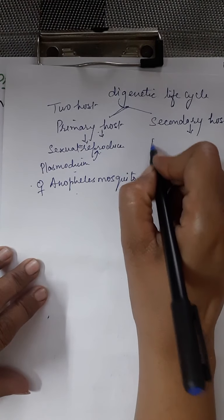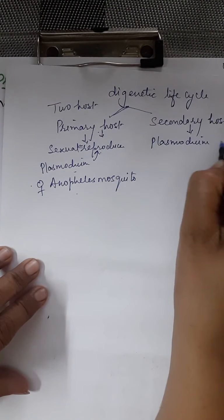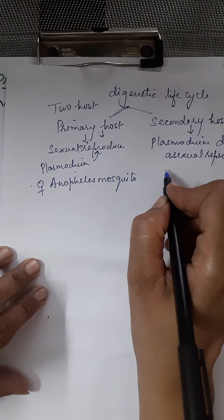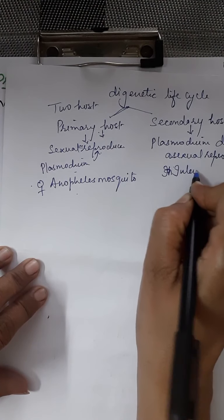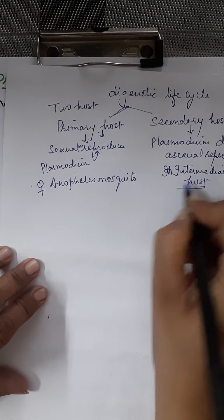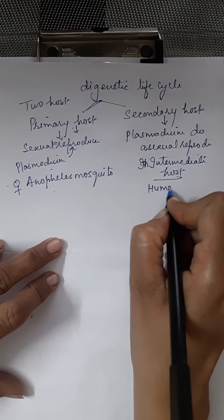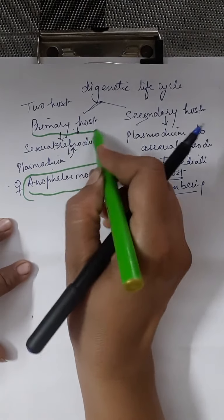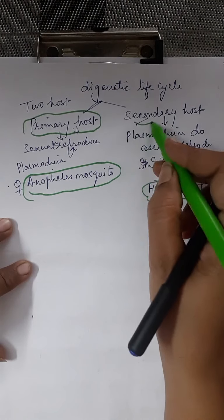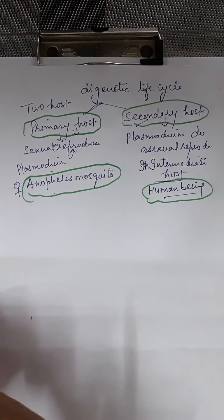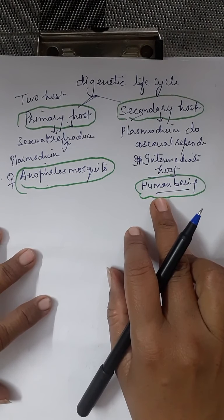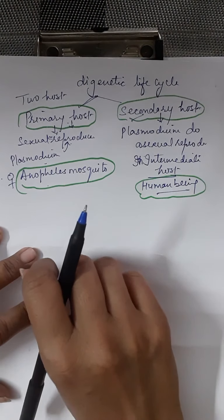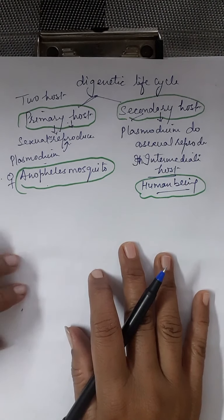The secondary host is where the Plasmodium does asexual reproduction. It can also be called the intermediate host. Human beings are the secondary host, while the female Anopheles mosquito is the primary host. This means Plasmodium does asexual reproduction in the human body and sexual reproduction in the body of the female Anopheles.